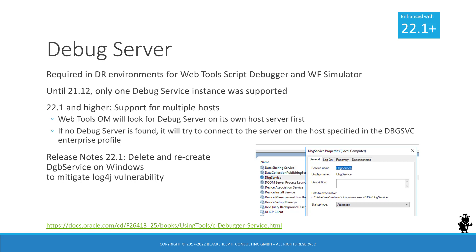Until 22.1, only a single debug service instance on a single Siebel server machine was supported. This has changed with 22.1 as it now supports multiple host machines. Administrators can now deploy the service on multiple Siebel server machines in Siebel development environments. The WebTools object manager hosting the script debugging session or workflow simulator session will look for the debug service on its own server first; if it doesn't find one, it will try to connect to the server specified in the dbgsvc enterprise profile. More information can be found in the Using Tools bookshelf guide 22.1 or higher.